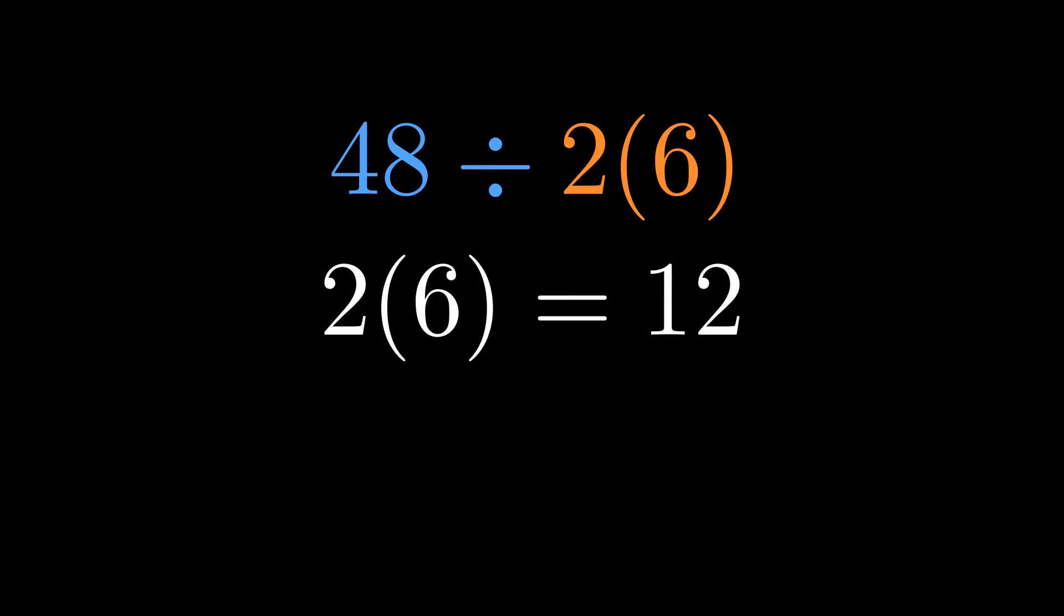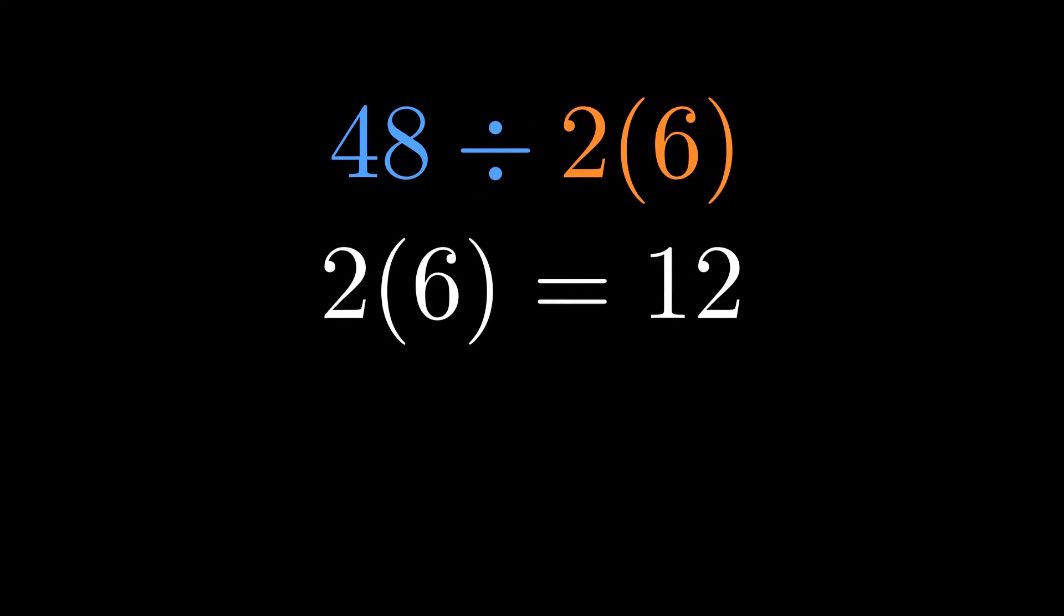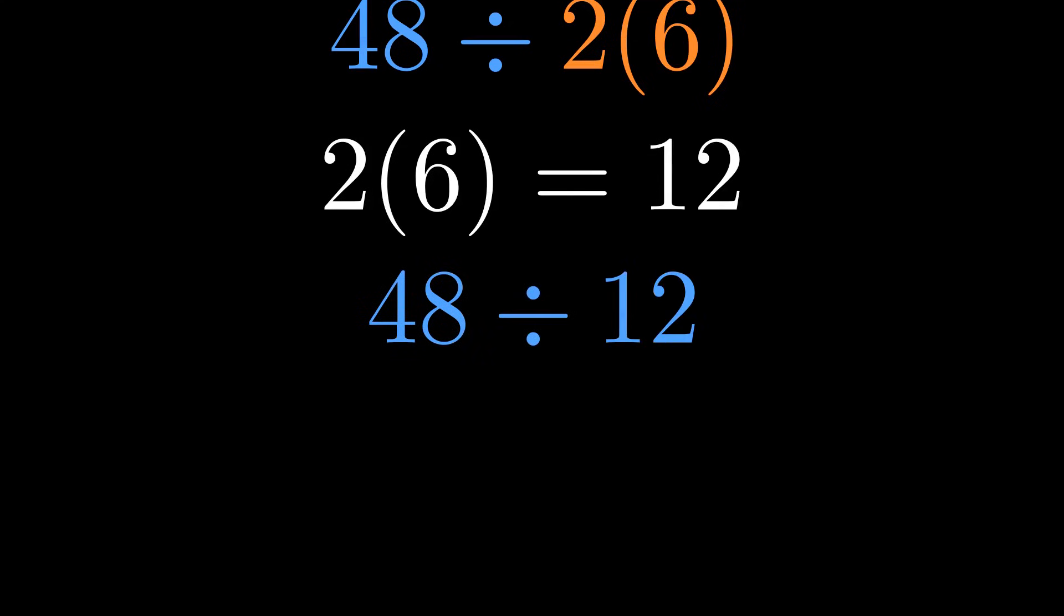So if we do 2 times 6 first, we get 12. That leaves us with 48 divided by 12, which equals 4. That's Team 4's answer. It feels right. It looks right. But is it right?